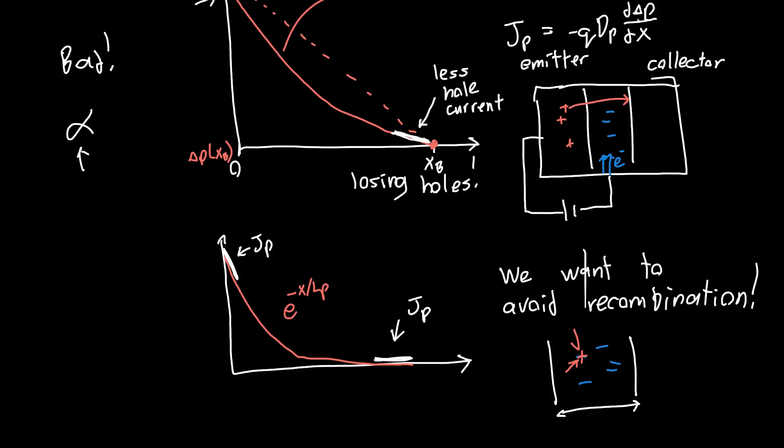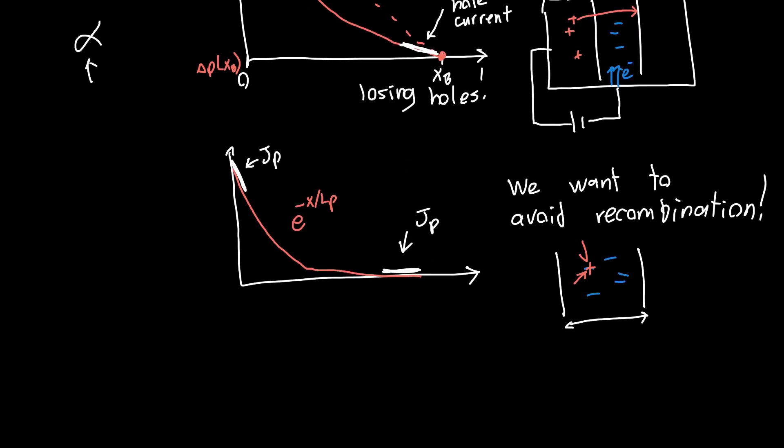And so we would like to know how much, exactly, how much of this hole current, let's call this JP final, makes it from the beginning of the base to the end of the base. And this is given by what's called the base transport factor, base transport factor alpha T.